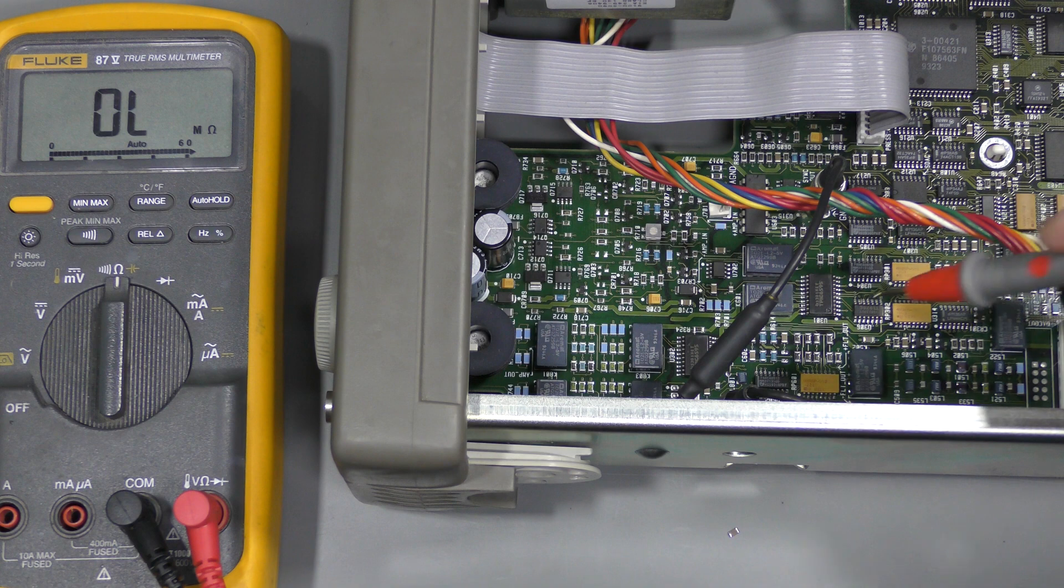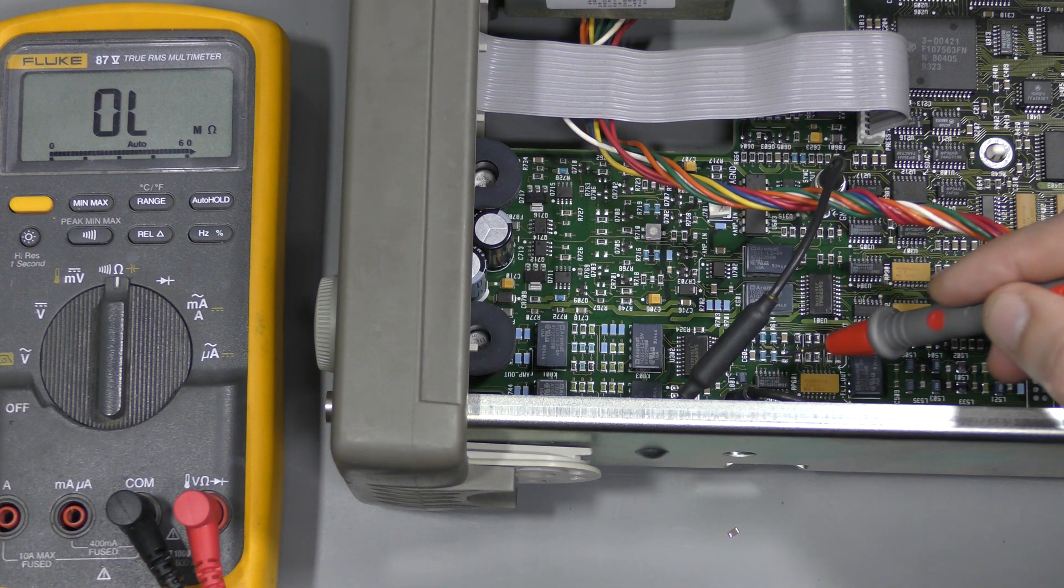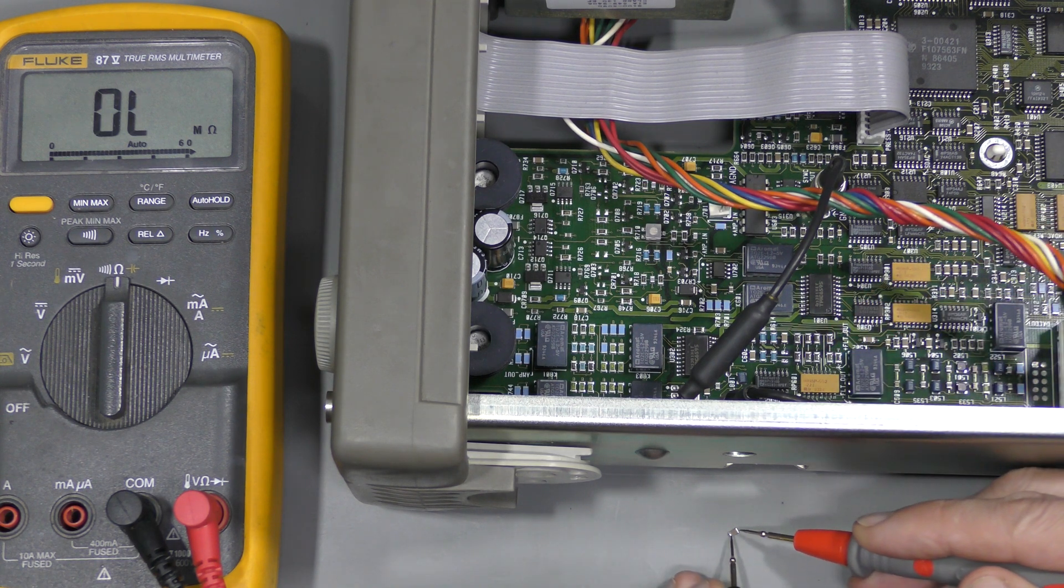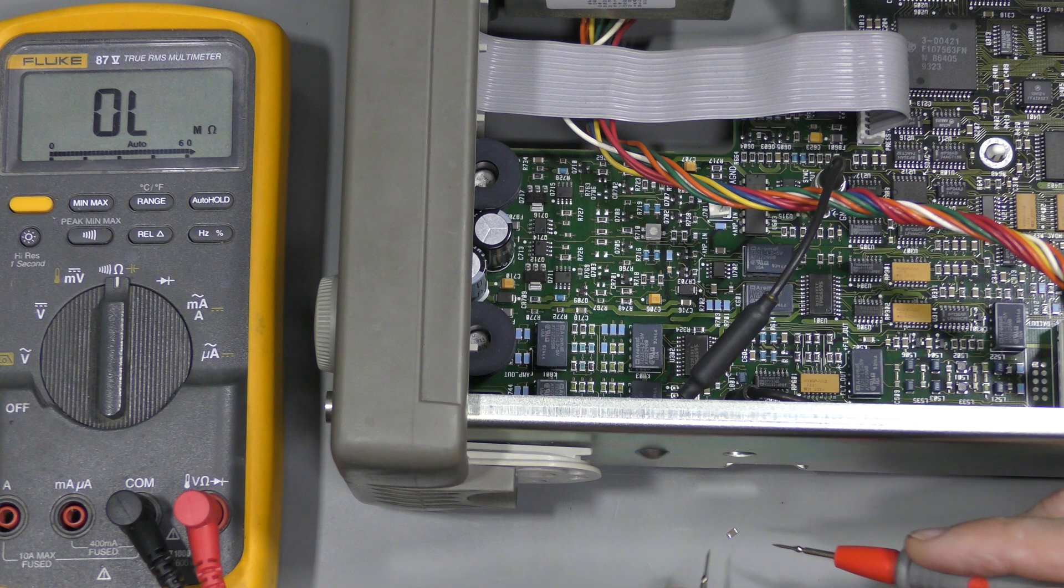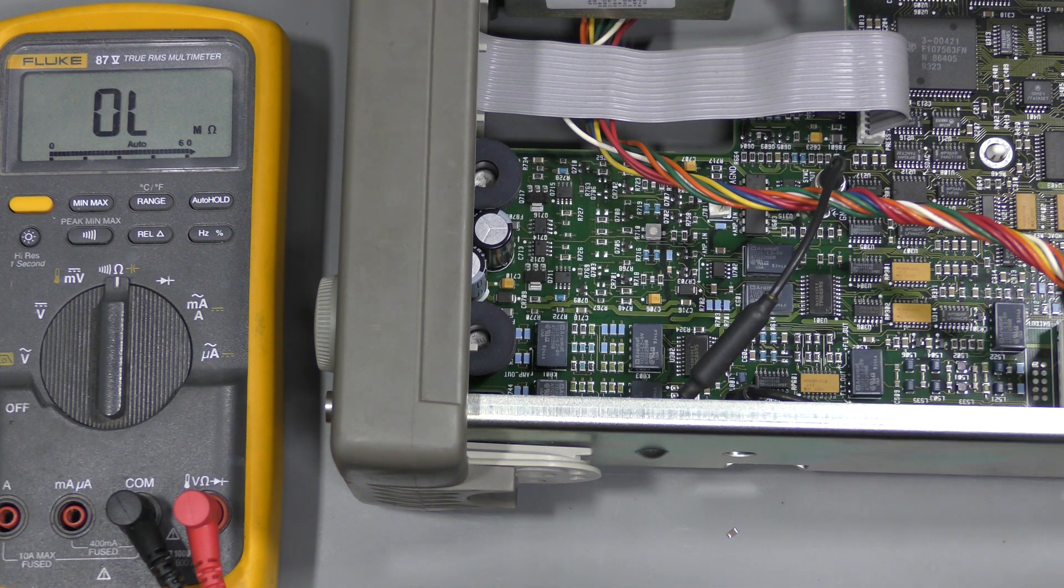So I removed this bypass capacitor here. And look at this, we have 14 ohms across it. So it was not a multiplexer after all. We need a new ceramic capacitor, 0.1uF 25V. This should be easy.